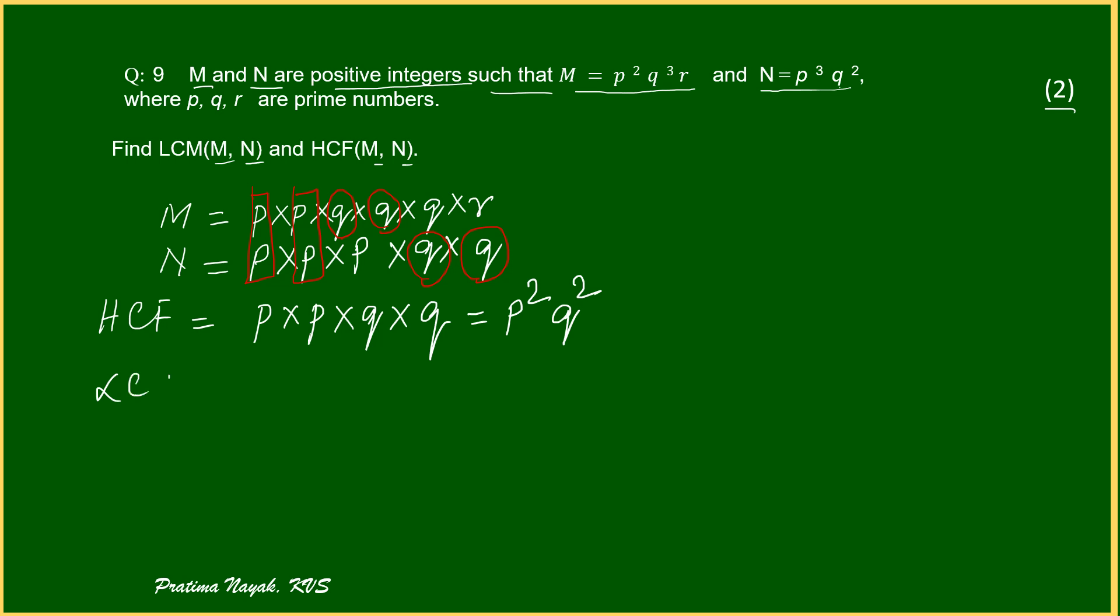Now, what about LCM? LCM is first you write down the common things that is same as your HCF. I will write p square multiplies q square. And what is left in M which were not common and what is left in N which were not common or not in M. We have to multiply all the things. So, here what was left in M? One q was left. One r was left. Left in N, one p was left. So, I will multiply p.